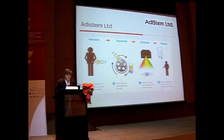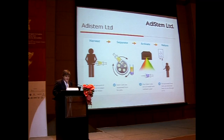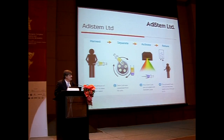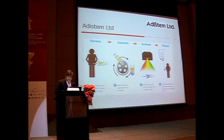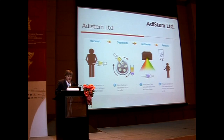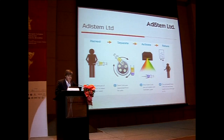Basically the procedure is an autologous single-setting procedure. It requires a mini liposuction, taking a bit of abdominal tissue, taking the lipoaspirate, removing the lipids, taking the stromal cells and activating them with some low-level lights, and then returning them back to the patient.